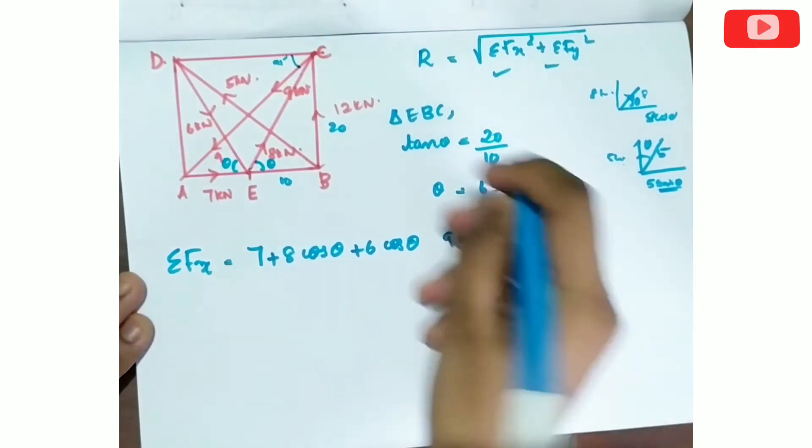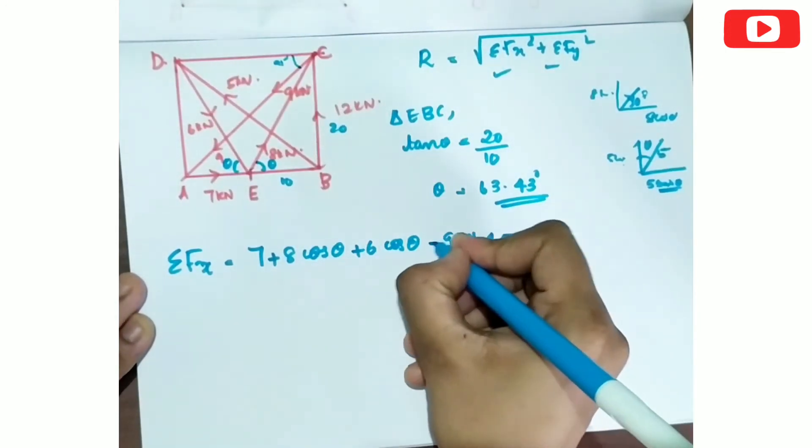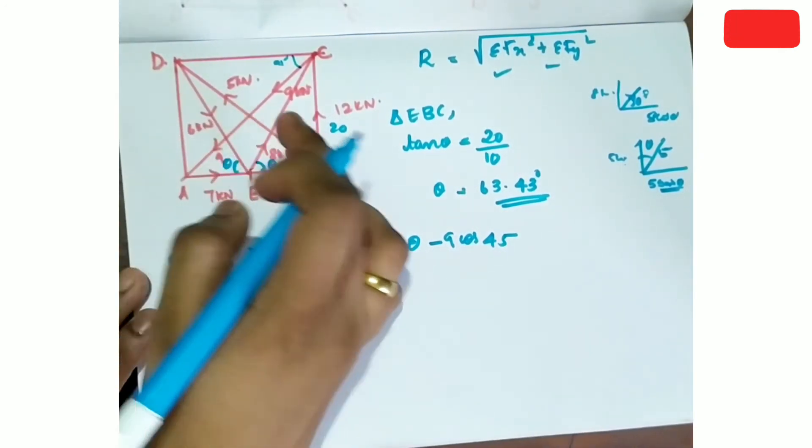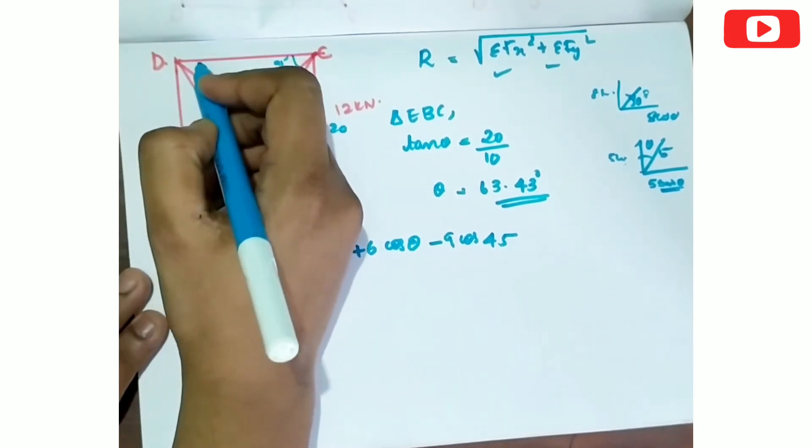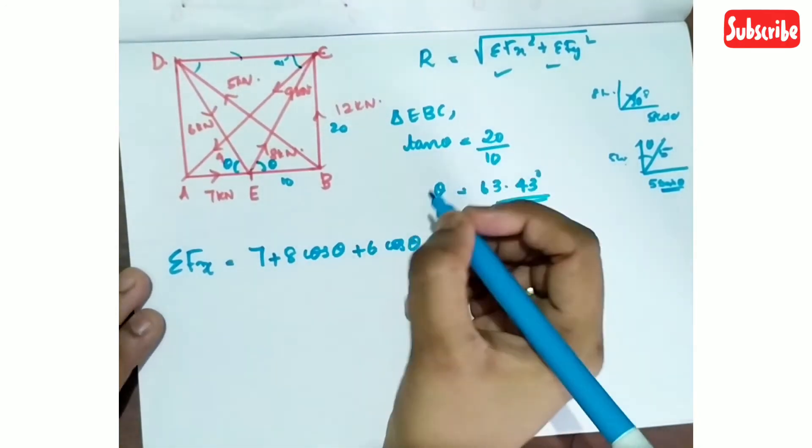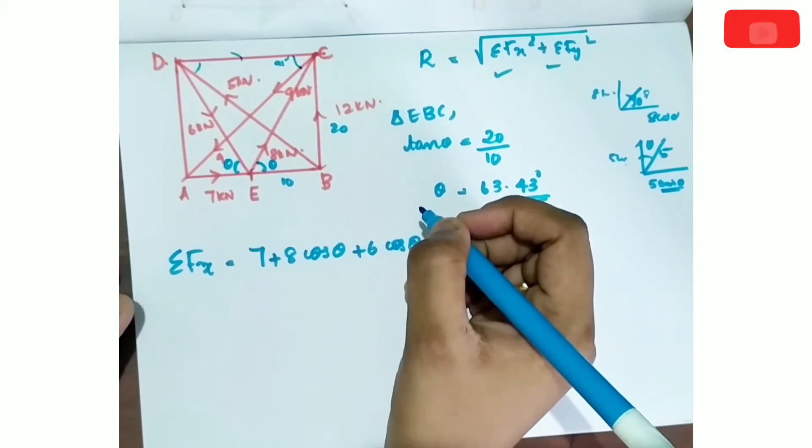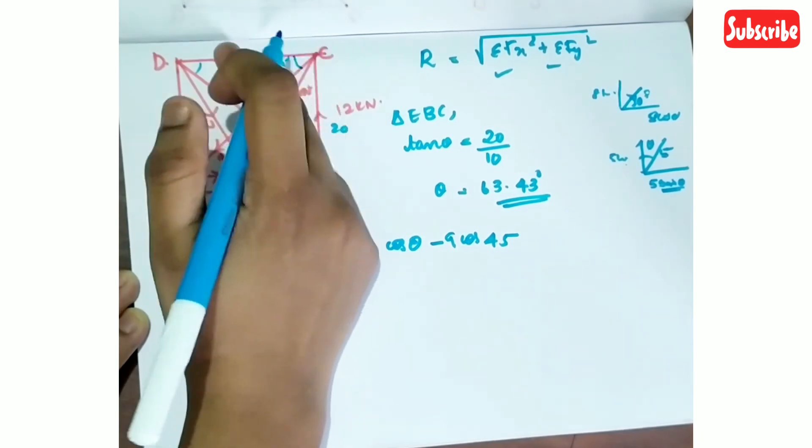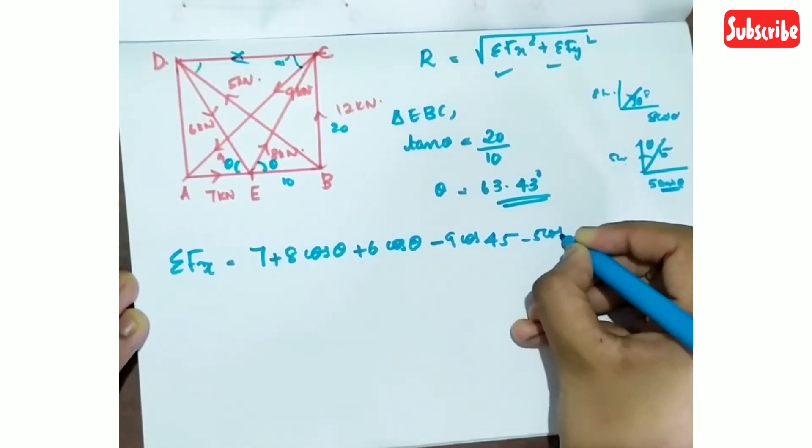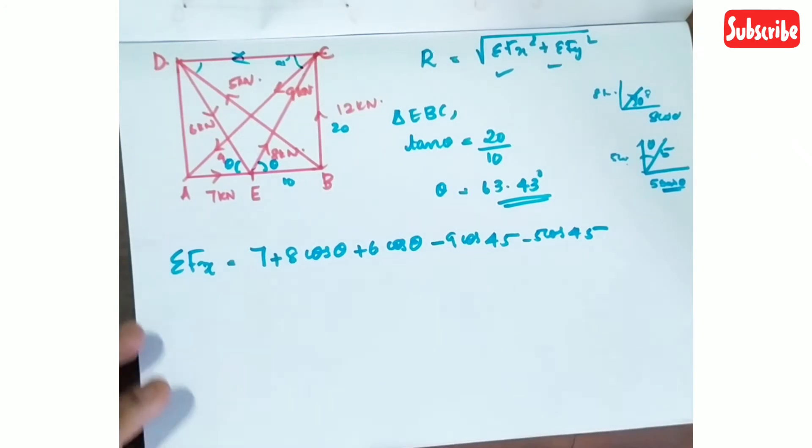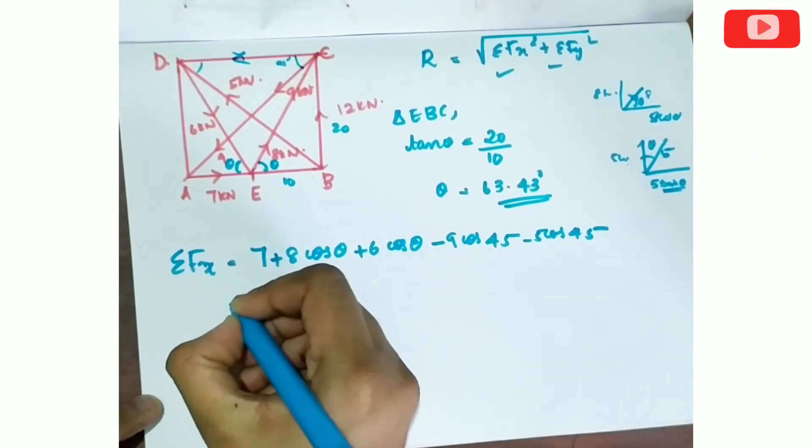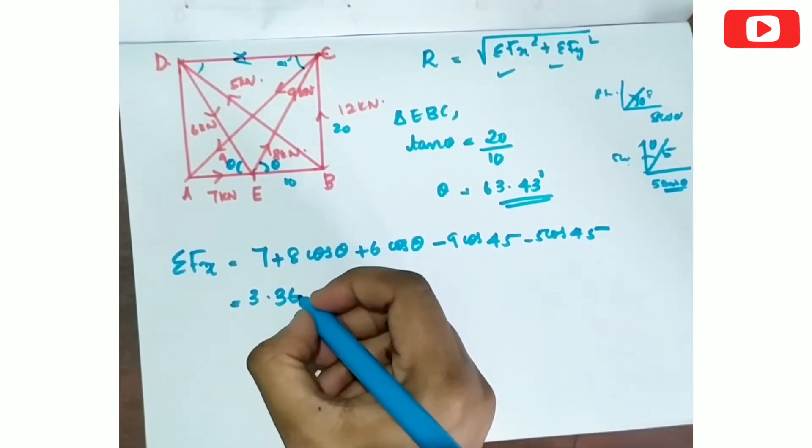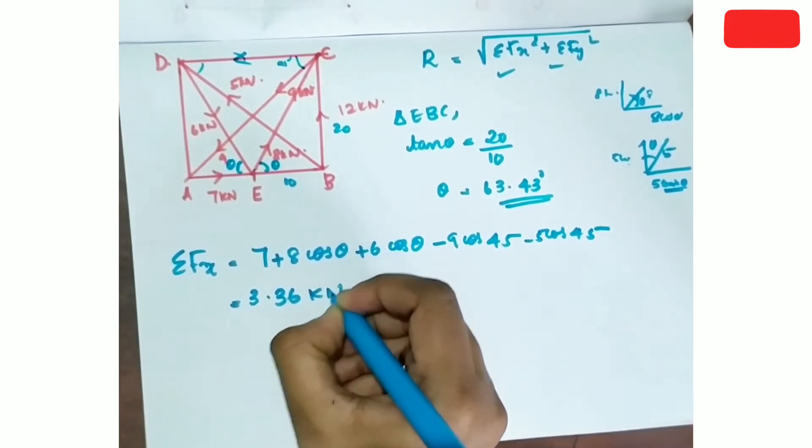Along the slope is cos theta, so 8 cos theta. The diagonal BD bisects at 90 degrees giving 45 degrees. For force 9, it's 9 cos 45. Force 5 goes left side so minus 5 cos 45. Similarly, forces in BD are at 45 degrees. When we substitute theta and solve, sigma Fx equals 3.36 kN.